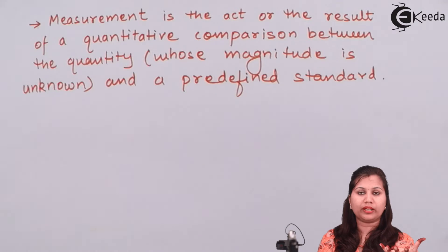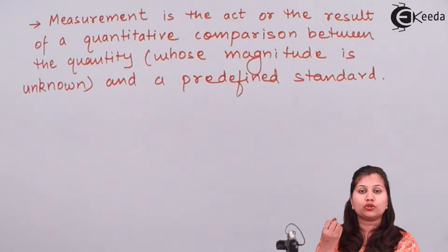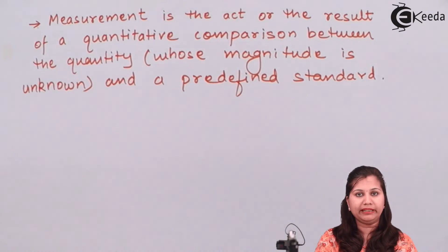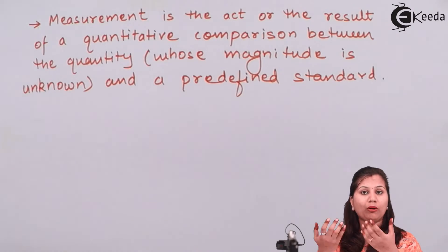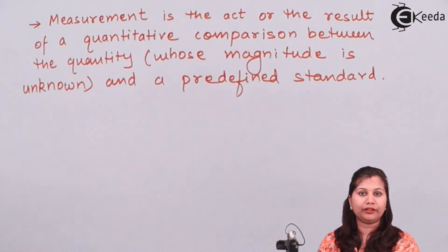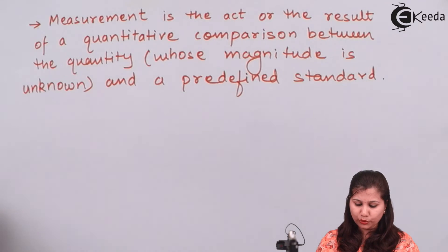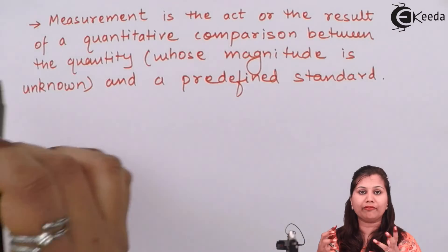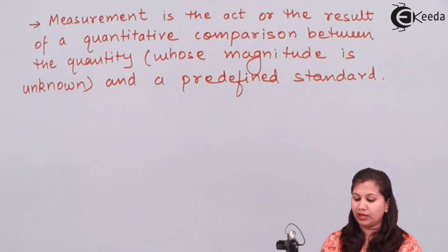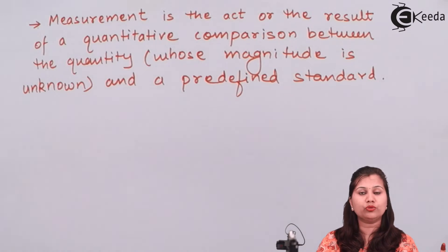The quantity whose amount we already know is called the predefined standard, and the unknown quantity — the unknown magnitude — is called the measurand. So in this definition we have two things: the measurand, whose value we want to measure, and the standard, whose value we already know.